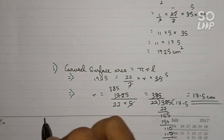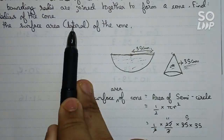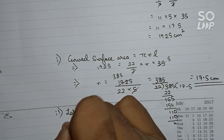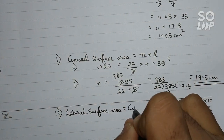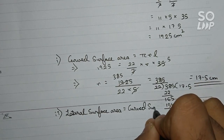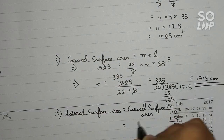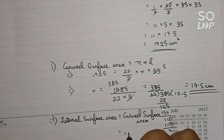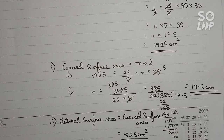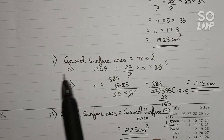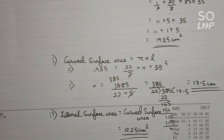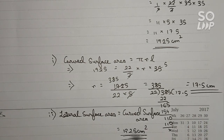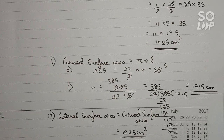Our second part asked for the surface area or lateral surface area of the cone. The lateral surface area is the same as the curved surface area, which we already know is 1925 cm². So the final answers are: radius of the cone = 17.5 cm and lateral surface area = 1925 cm². Thanks for watching — please subscribe for more solutions.